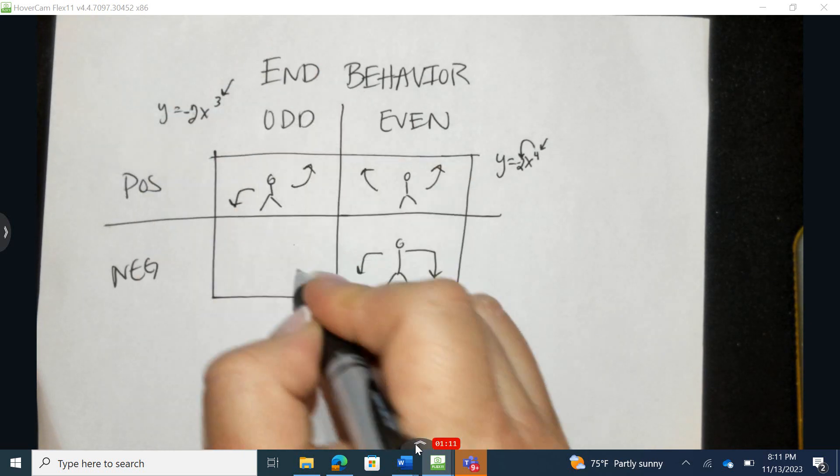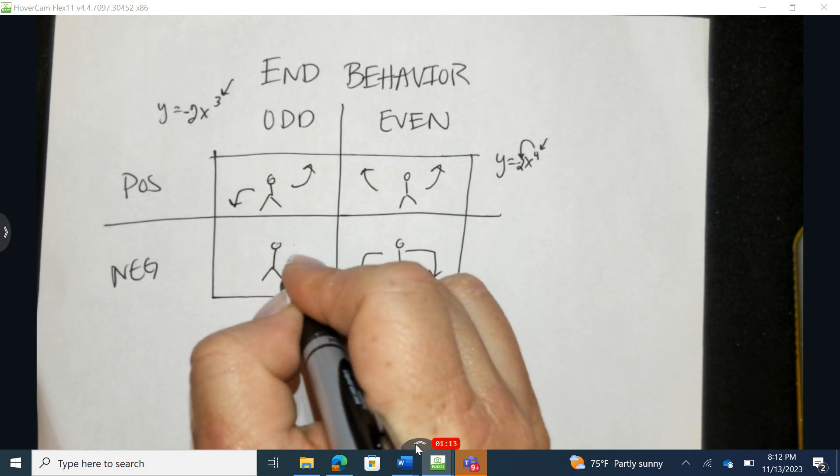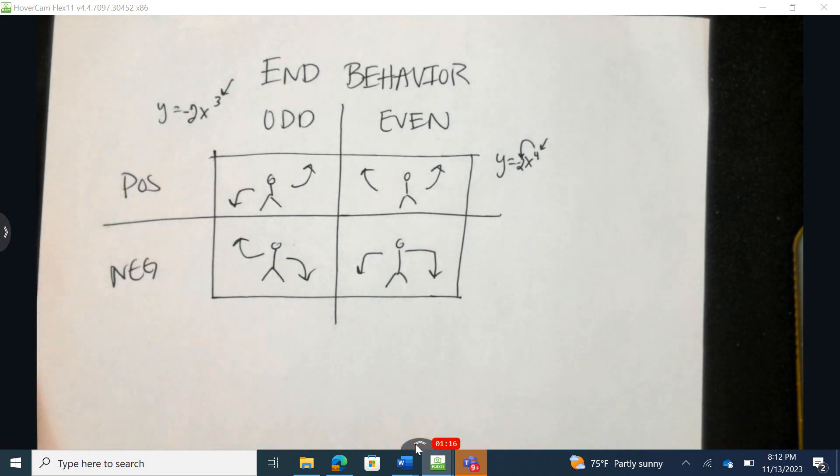When this number is negative, it's just the opposite. It's vice versa. It's down on the right and up on the left. And we're going to use that as we do 1 through 4.